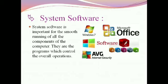System software is important for the smooth running of all the components of the computer. They are the programs which control the overall operations. As we see in this picture, Windows 7 and AVG software are examples of software which control many operations and programs in the computer.